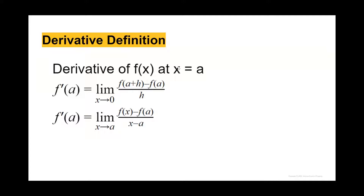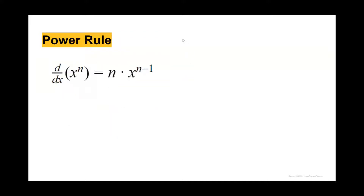For the derivative definition, we have f prime equals the limit of x approaching a of f of x minus f of a divided by x minus a. And then for the power rule, we have x raised to n equals n times x raised to n minus 1.